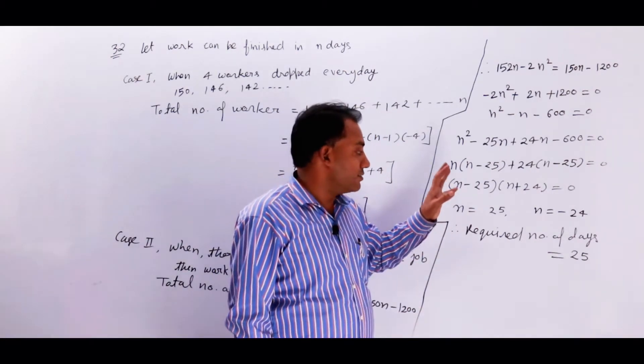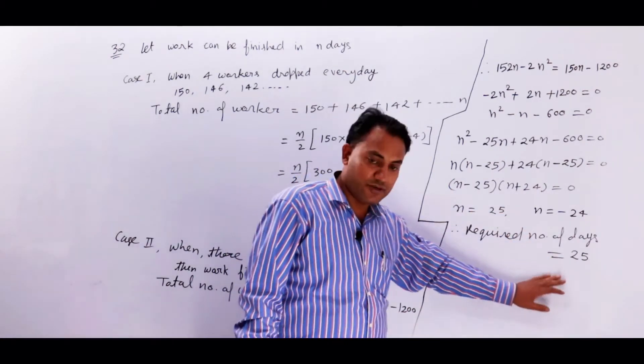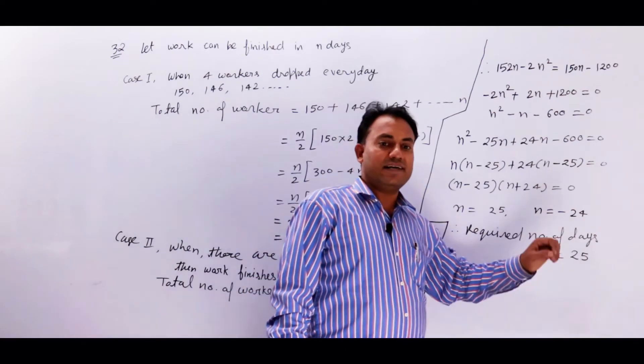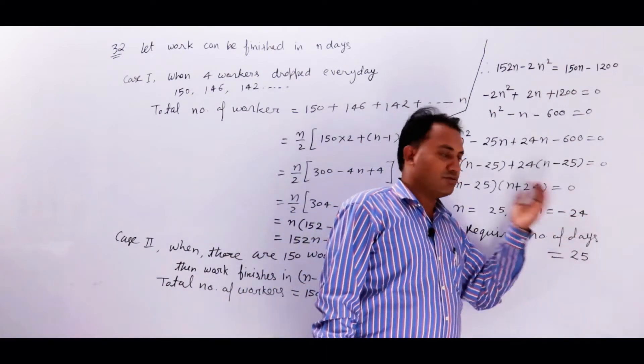Now you can see that the number of days are 25, because the number of days is negative, then we will leave it.